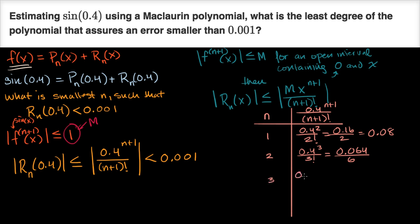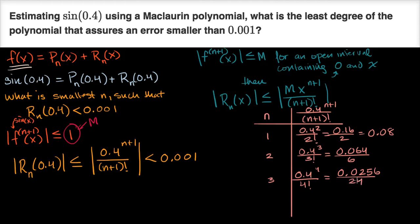Let's try n equals three. That gives 0.4 to the fourth power over 4 factorial: 0.0256 over 24. We're almost there — this is a little bit more than 0.001, so n equals three doesn't quite do the trick. I'm already guessing that n equals four is going to work.